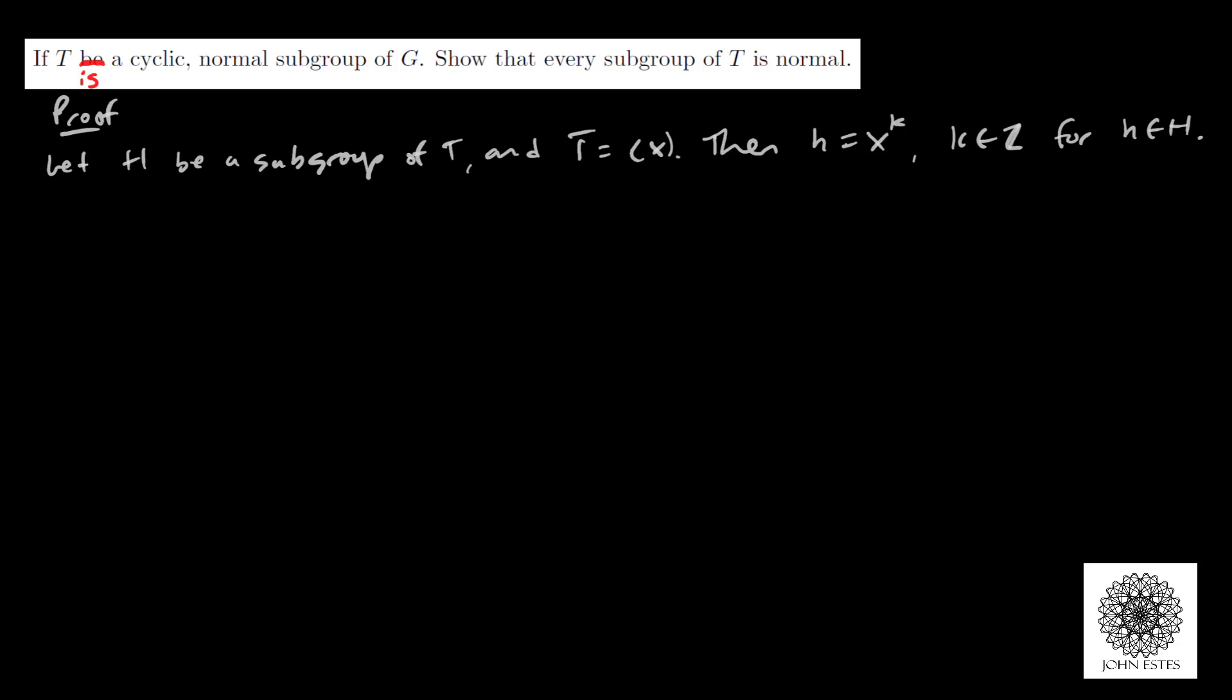For any G in the group, we have GHG^(-1), and that's what we need to show for normality. GHG^(-1) can be written as GX^K G^(-1), which is another way of saying (GXG^(-1))^K.